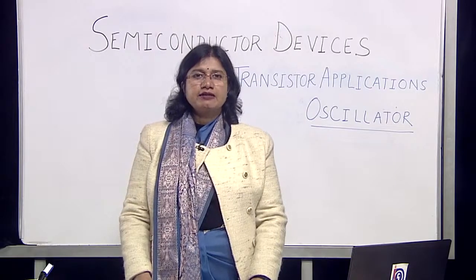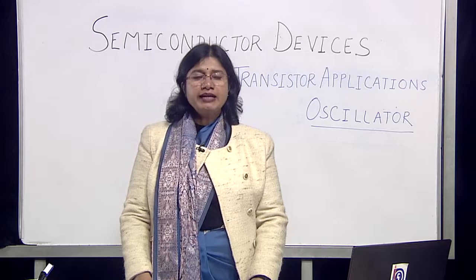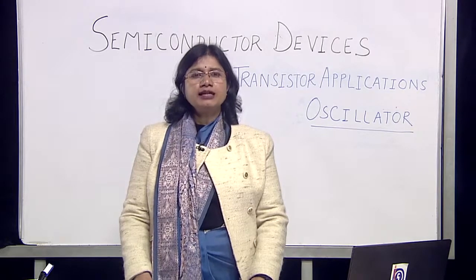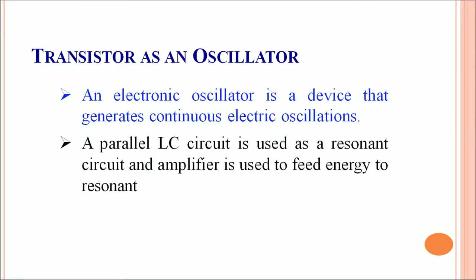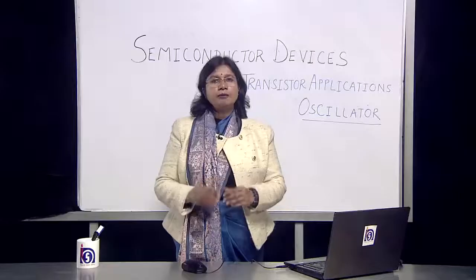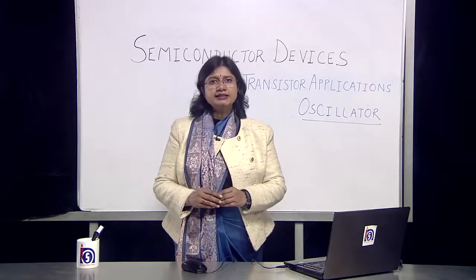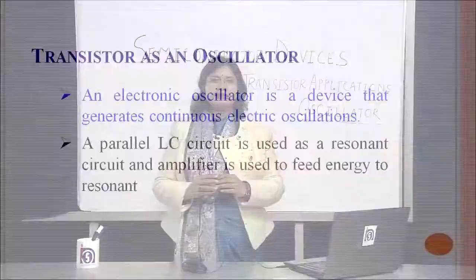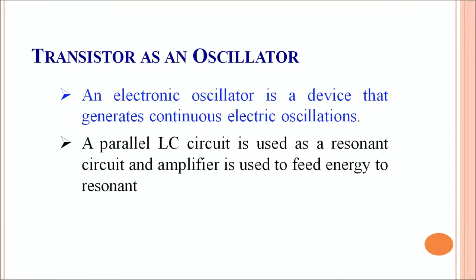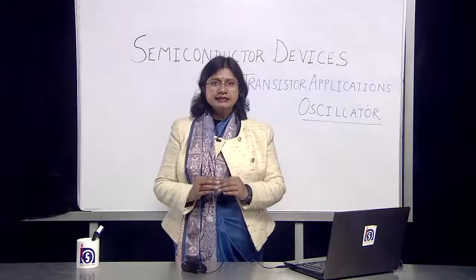The transistor is possibly a very good oscillator. An electronic oscillator is typically a device that is capable of generating continuous electric oscillations. A large number of electrical devices make use of transistors as an oscillator. In a simple oscillator there is a parallel LC circuit — that is an inductor-capacitance circuit — which is used as a resonant circuit, and an amplifier which is used to feed the energy back to the resonant circuit.